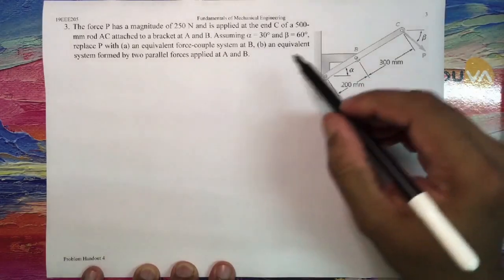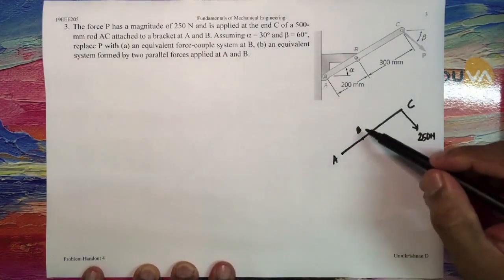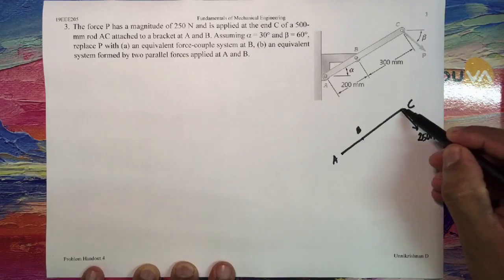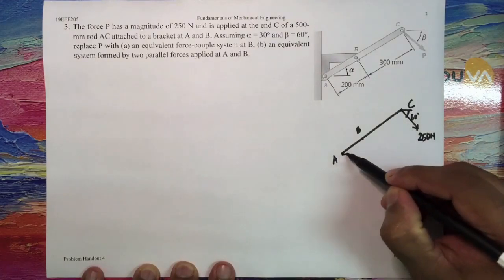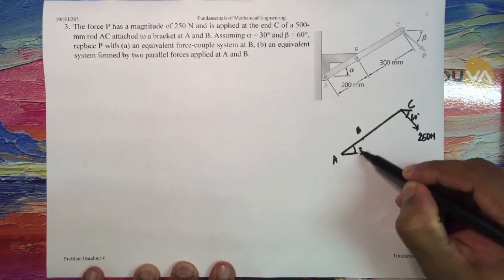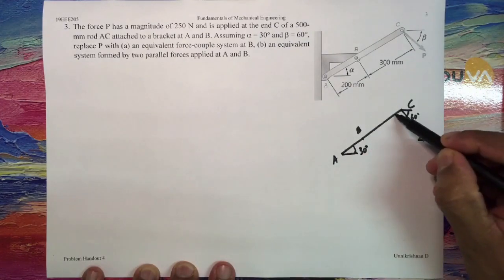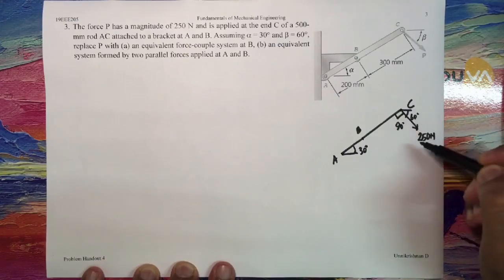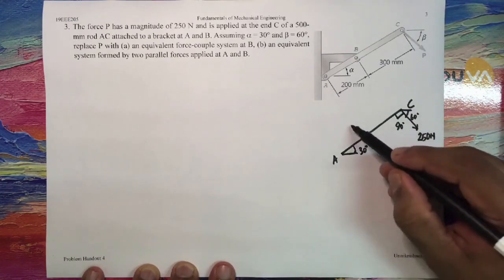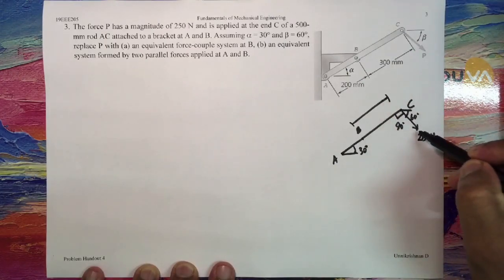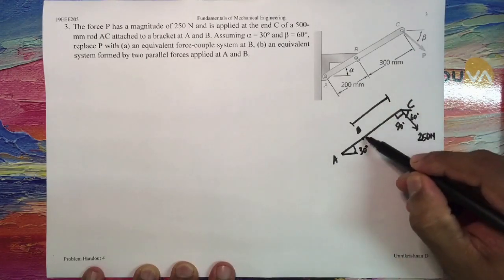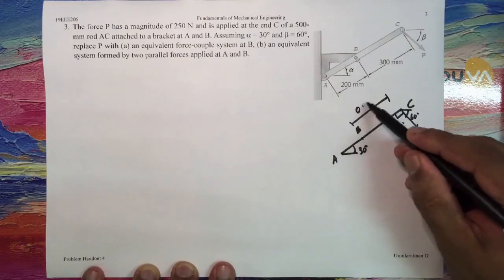It is applied at an angle of 60 degrees, this angle being 60 degrees, and alpha is given to be 30 degrees, which in fact leaves this angle to be 90 degrees. So in order to shift this force P 250 Newtons from this point to point B, I just have to move this force by 0.3 meters.